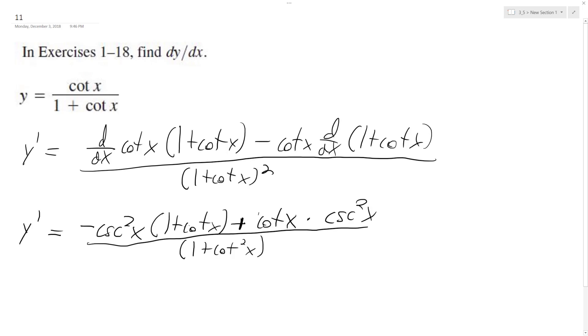So when we distribute here, we had a negative cosecant... so these cancel each other out and we're left with negative cosecant squared x over 1 plus cotangent squared x, which ultimately becomes negative cosecant squared x over quantity 1 plus cotangent squared x.